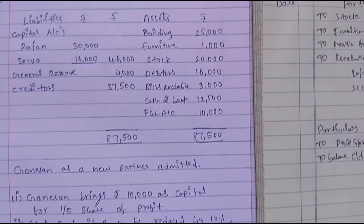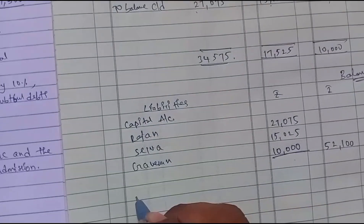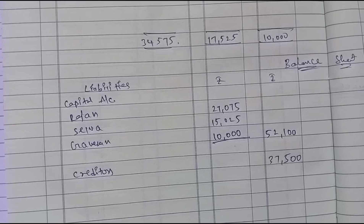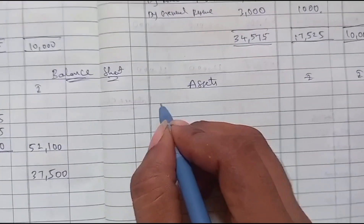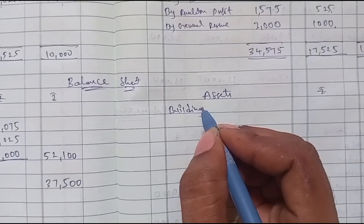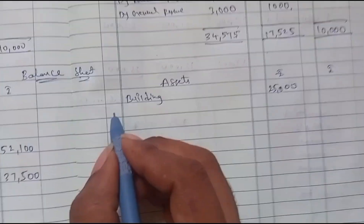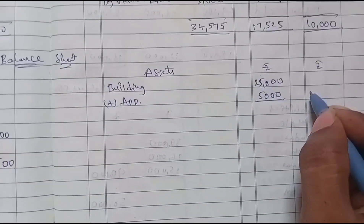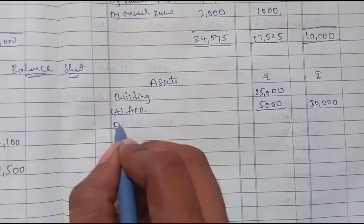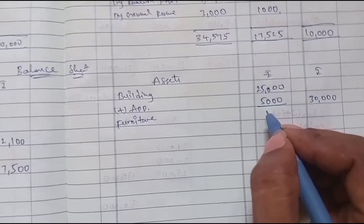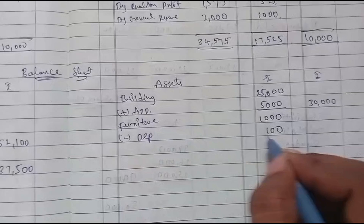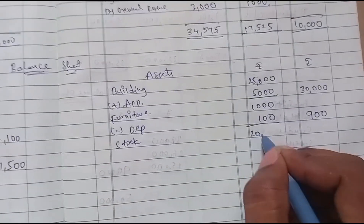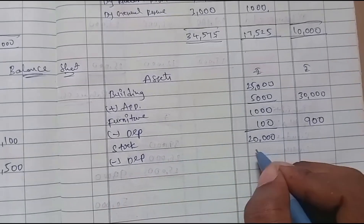Now the balance sheet. Building: balance sheet value is 25,000, plus appreciation of 5,000, total is 30,000. Furniture: balance sheet value is 1,000, minus depreciation of 100, equals 900. Stock: balance sheet value is 20,000, minus decrease of 2,000, equals 18,000.